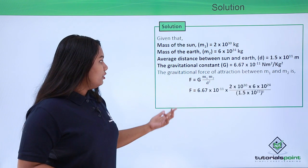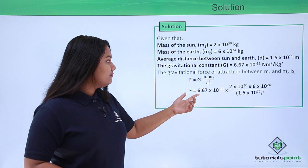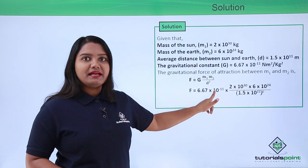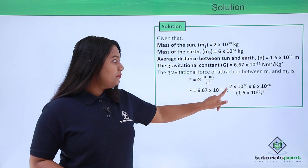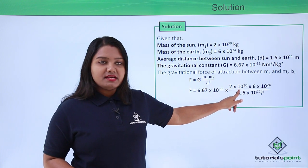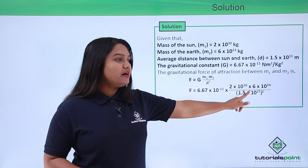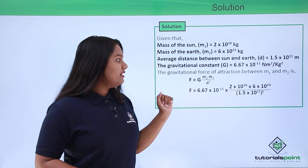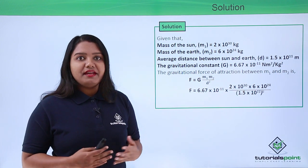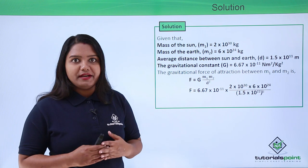On putting the values in this expression we have F = 6.67 × 10^-11 × 2 × 10^30 × 6 × 10^24 / (1.5 × 10^11)².